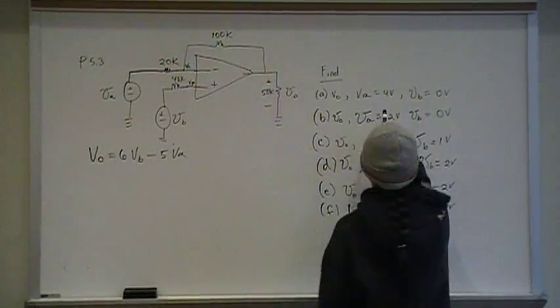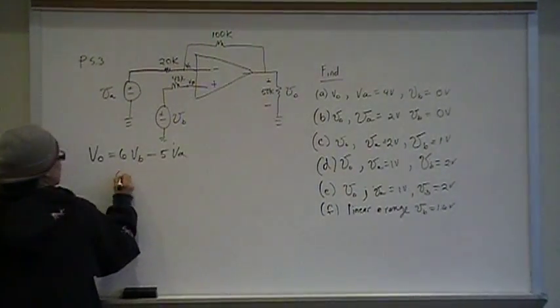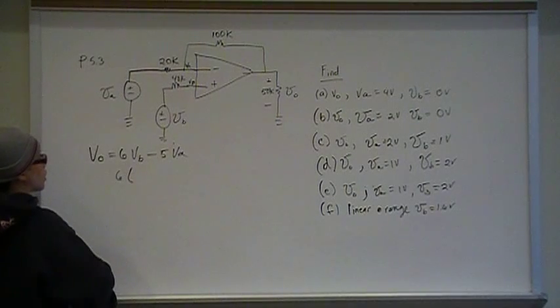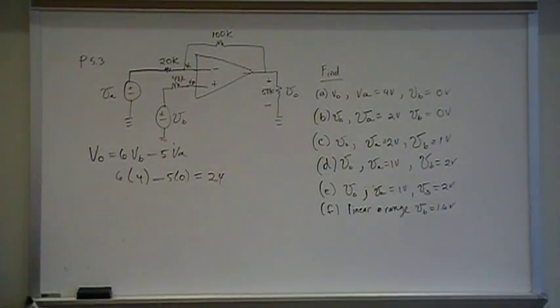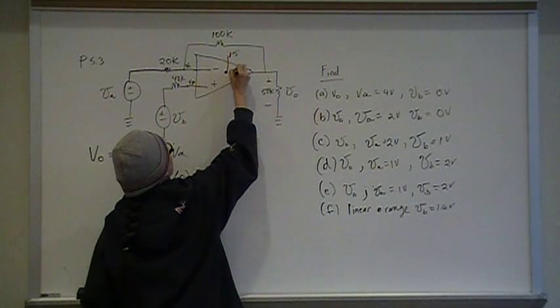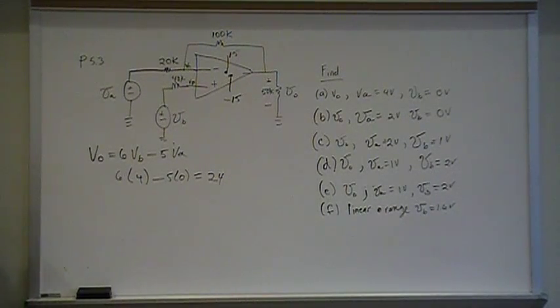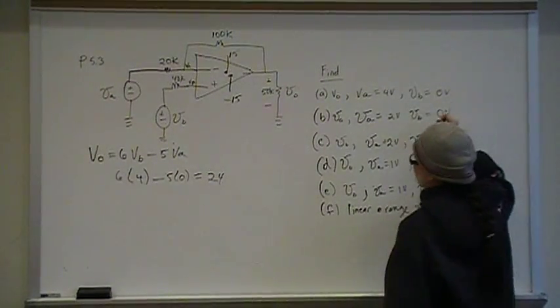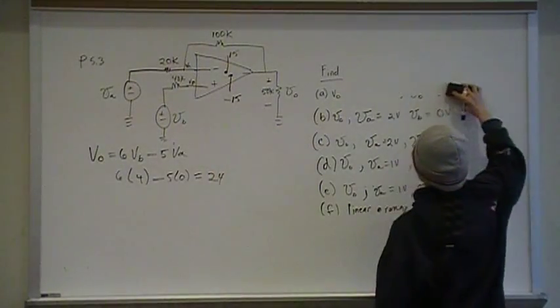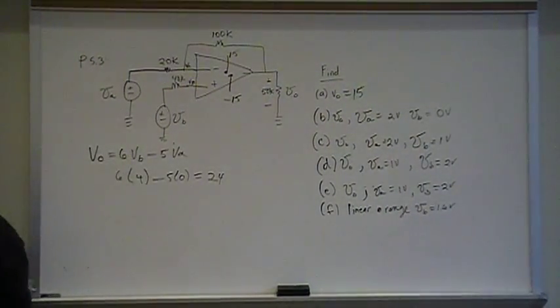We just solved this general equation that relates everything together: Vout is 6 VB minus 5 VA. So then when VA is 4 and VB is 0, we have 6 times 0 minus 5 times 4, which is negative 20. But our terminal voltages are 15 positive and negative 15, and we can't exceed that. So it saturates at 15. Therefore, when at these values, our Vout will be negative 15.